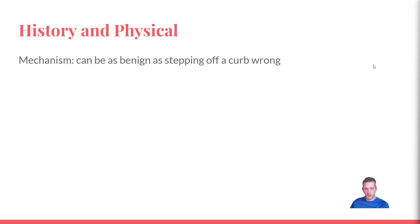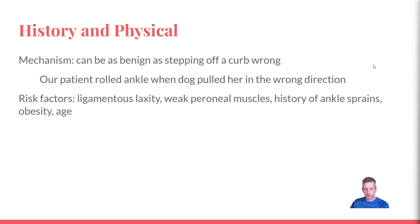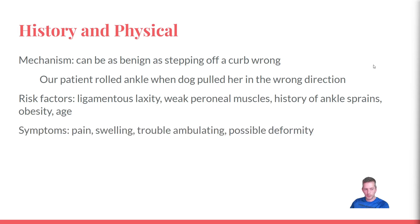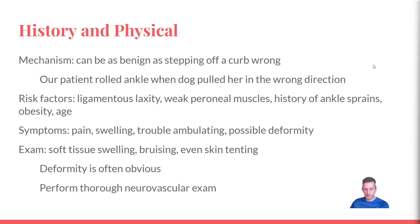The mechanism can be fairly benign, such as stepping off a curb or stair — our patient was simply walking her dog. Risk factors include ligamentous laxity, weak peroneal muscles, history of ankle sprain, obesity, and older age. Patients report pain, swelling, trouble ambulating, and often a deformity. On exam, soft tissue swelling is usually obvious, sometimes with bruising, skin tenting, or even an open fracture. A thorough neurovascular exam is essential.